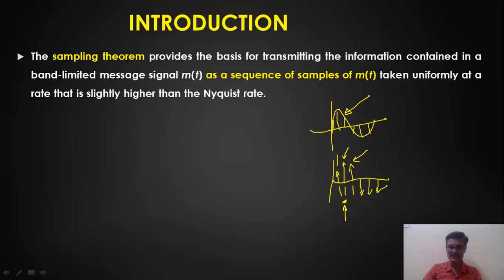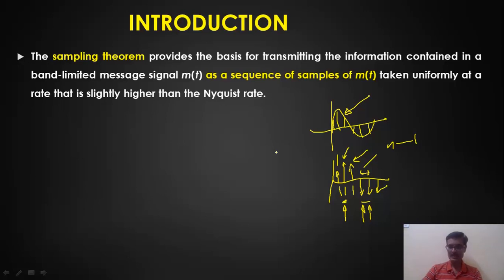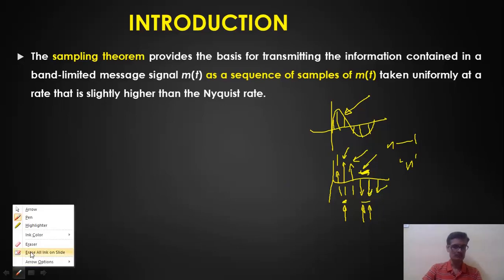We can make use of this time gap between the samples by transmitting the samples of other signals during that time interval. Wherever there is a gap, if I insert the samples of the other n minus one signals and utilize the time slots between two samples belonging to the same signal, this process is called time division multiplexing. We are actually transmitting the samples of n number of signals within this time interval, and then the sample of the first signal repeats.